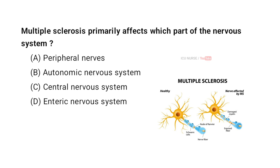Multiple sclerosis primarily affects which part of the nervous system? A. Peripheral nerves, B. Autonomic nervous system, C. Central nervous system, D. Enteric nervous system. And the correct answer is C. Central nervous system.